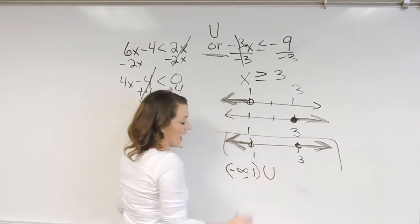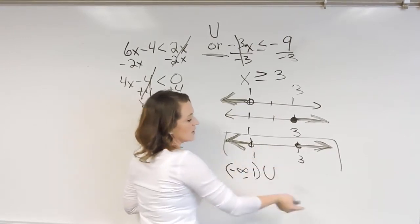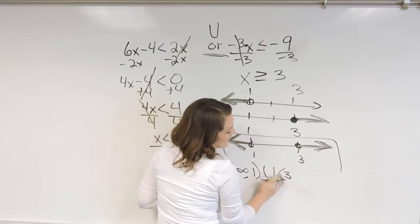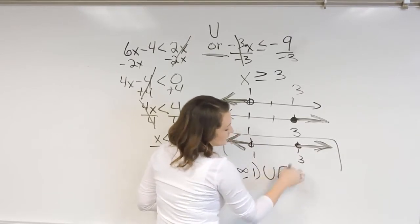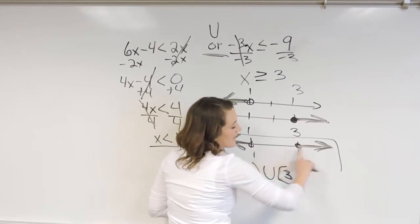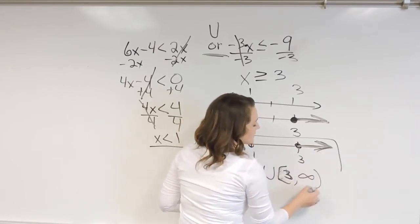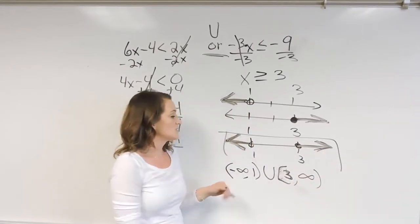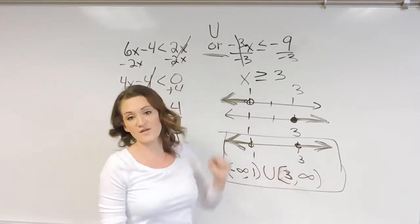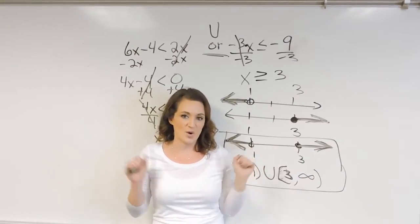But then we also have, so we're union, we also have answers starting from 3. And I'm sorry, that's supposed to be a bracket. If you have a solid dot, it's always a bracket. And we have 3 here, and then that's going to go all the way to positive infinity. So this is what our graph would look like along with our interval notation on finding the union given two inequalities.